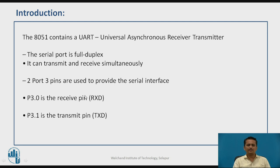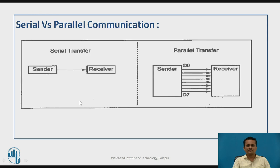As we know from the pin diagram, RXD and TXD are the two pins related to this UART module. Whenever you are sending data, it goes onto pin 3.1 (the TXD pin). Whenever you are receiving data, the data will come onto pin 3.0 (port 3, pin number 0), which is the RXD pin.